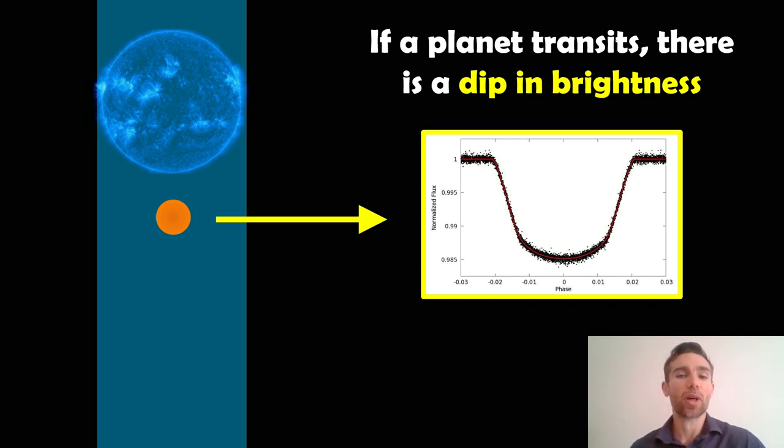So one way of detecting exoplanets is to look for a dip in brightness of the star. As a planet passes in front, it blocks out some of the light, we get a dip in the brightness which looks like a bit of a u-shaped dip essentially. It looks like this. It's quite straightforward. The bigger the planet, the bigger the dip. So we can then detect planets due to that method.